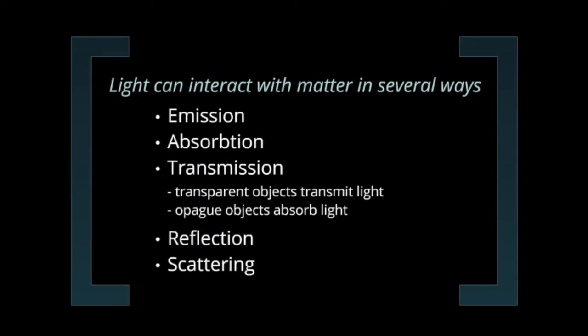Light interacts with matter in several ways. Matter can emit light—emission. Matter can absorb light—absorption. Light can pass through matter and transmit through it—transmission. You're familiar with this with your glasses. Light will transmit through your glasses, but if you have a wall, light will not transmit through the wall, so the wall would be opaque. If you have sunglasses, they don't transmit as much light as your regular glasses, but they still transmit some. There's also reflection, like light reflecting from a mirror. And there's scattering—if you shine light on a wall, that light will scatter.